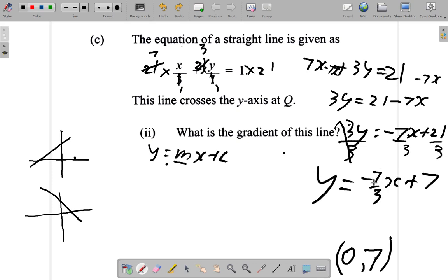So, we can see that the gradient, which is the number that multiplies x, is negative 7 over 3. So, that would be the gradient.